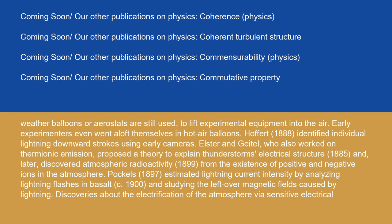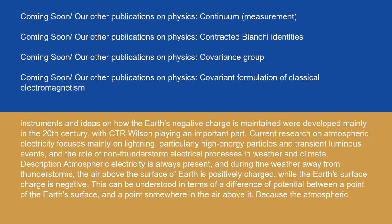Discoveries about the electrification of the atmosphere via sensitive electrical instruments and ideas on how the Earth's negative charge is maintained were developed mainly in the 20th century, with CTR Wilson playing an important part. Current research on atmospheric electricity focuses mainly on lightning, particularly high-energy particles and transient luminous events, and the role of non-thunderstorm electrical processes in weather and climate.